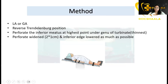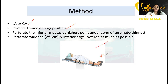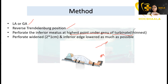The patient is given either local anesthesia or general anesthesia and is positioned in the reverse Trendelenburg position. The inferior meatus is perforated at the highest point under the genu of the turbinate. The perforation is then widened and the inferior edge is lowered as much as possible to access the maxillary sinus.